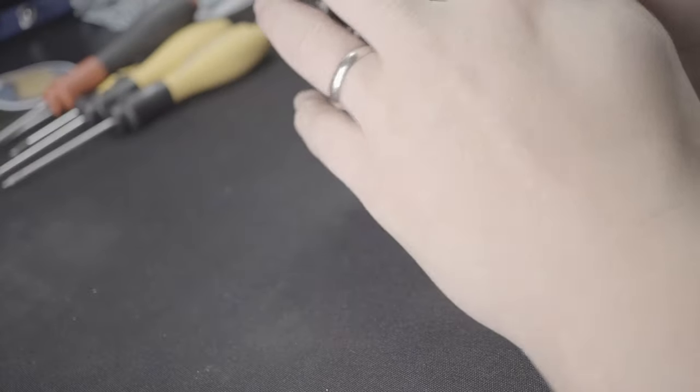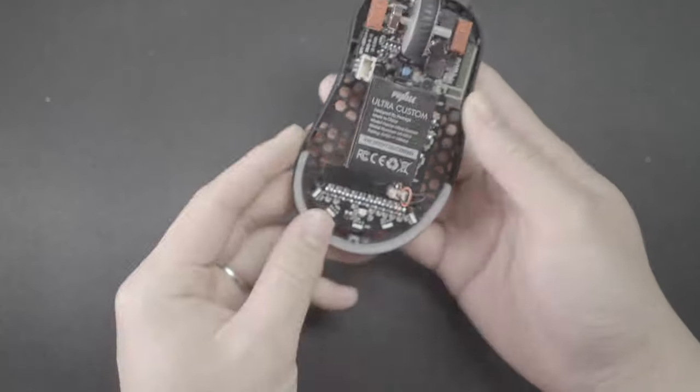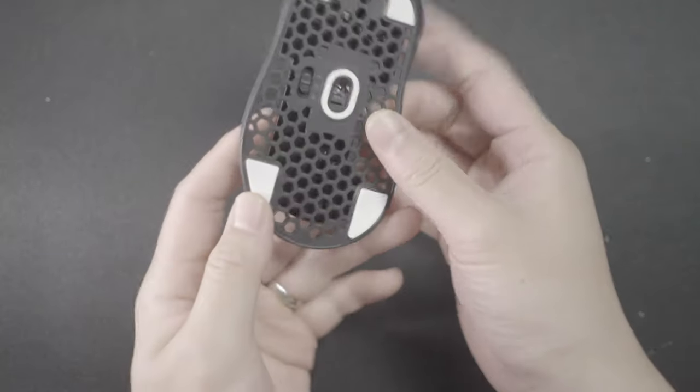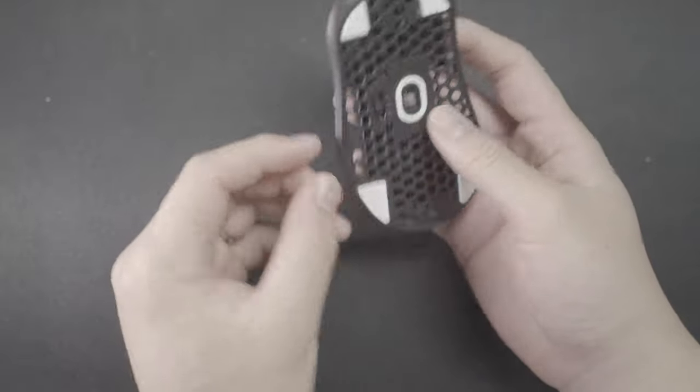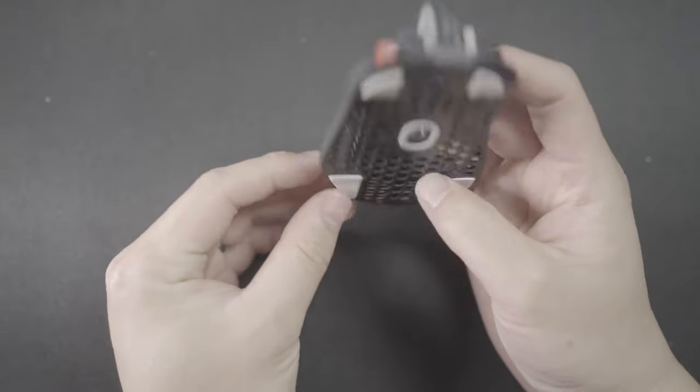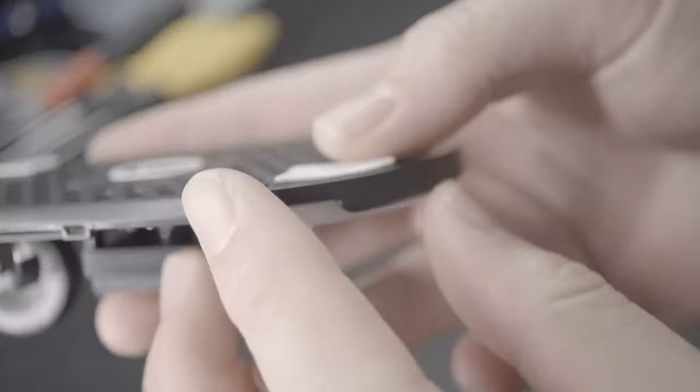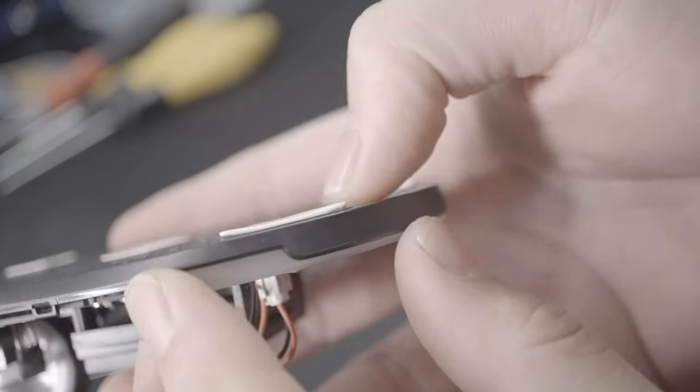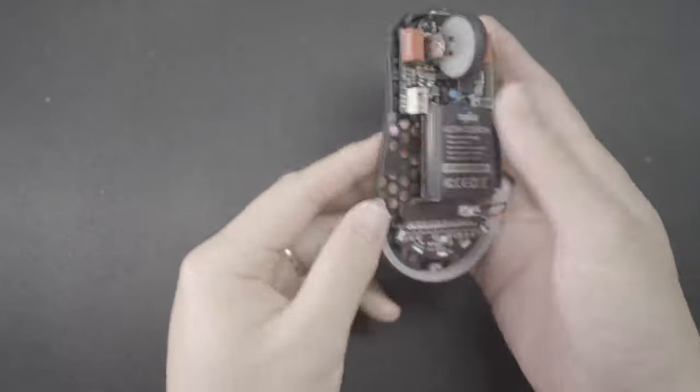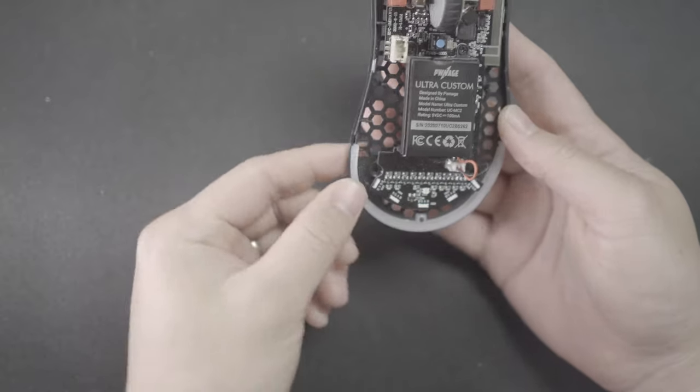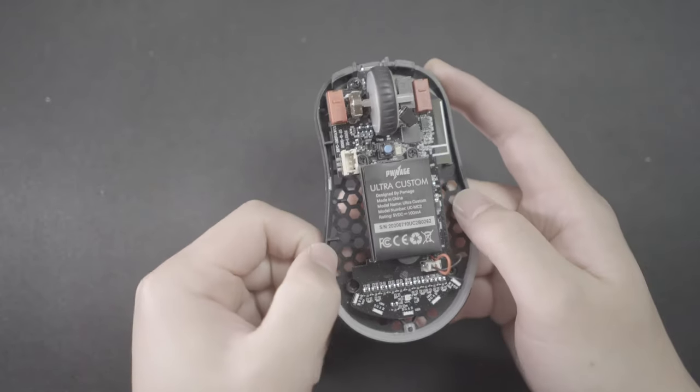First thing we're going to do is remove the top shell from the base of the mouse. There are two screw holes right here underneath the rear PTFE feet. If you're careful with taking them off, you'll be able to take them off and reuse them. These are a little crooked as you can see. I've taken them off a couple times and I've reused them. There's really no issues. Still glides just fine. But make sure that you're careful with them if you want to reuse them or if you don't have any extras.